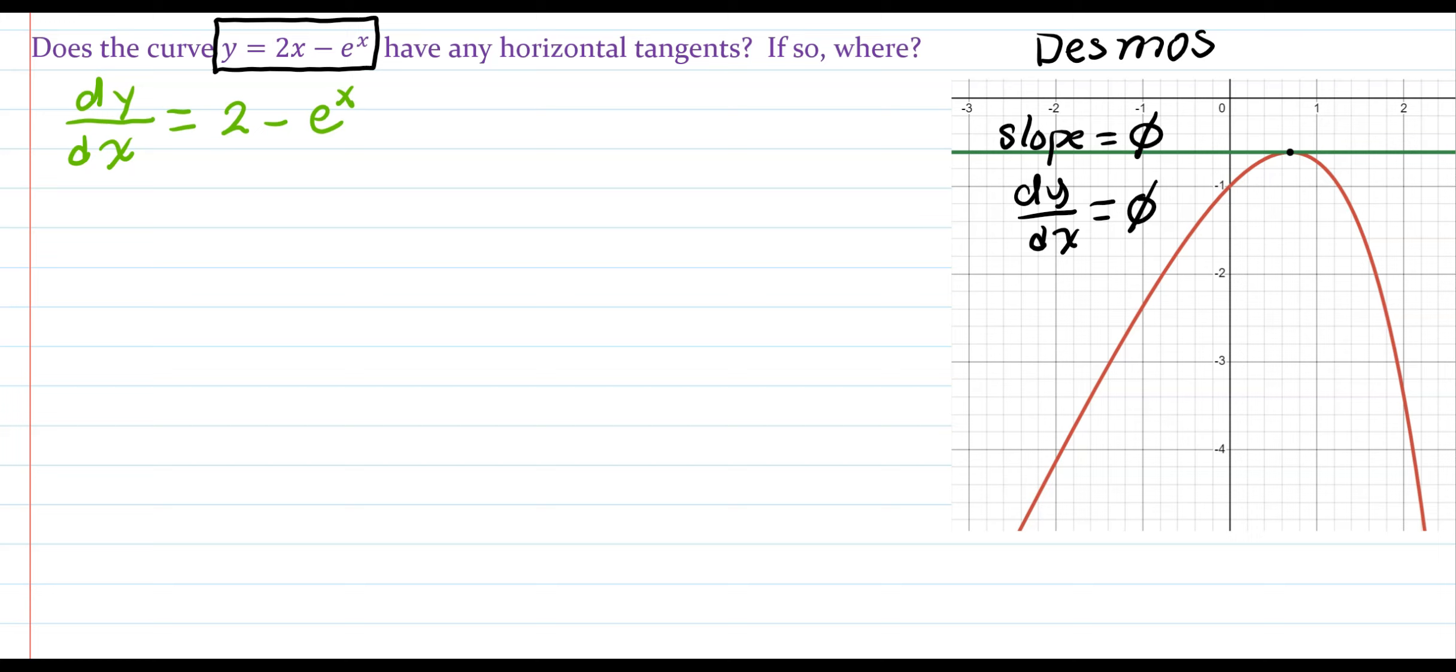So what are we going to do? Set it equal to zero. Horizontal tangent line has the slope equal to zero. So, we would say 2 minus e to the x is equal to zero.